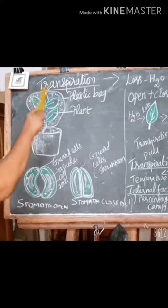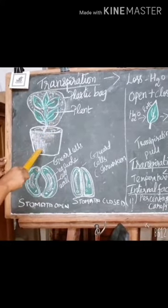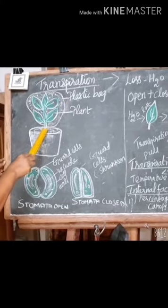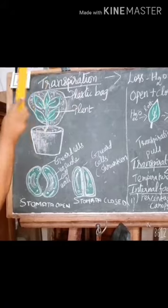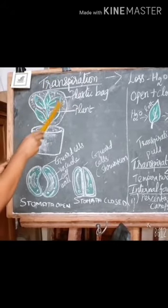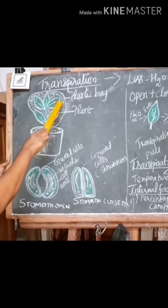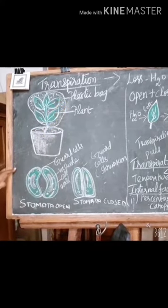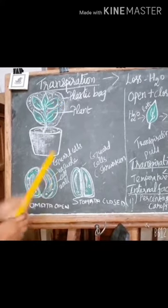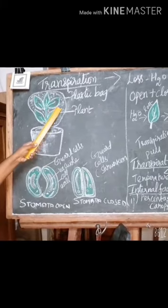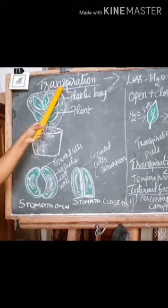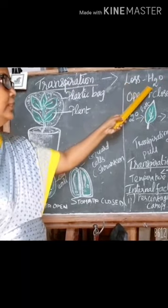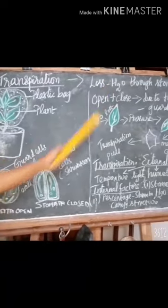Take a potted plant, then cover it with a plastic bag. The next day you can see water drops present inside the plastic bag. This is due to transpiration. Transpiration means evaporation or loss of water through stomata in the leaves.